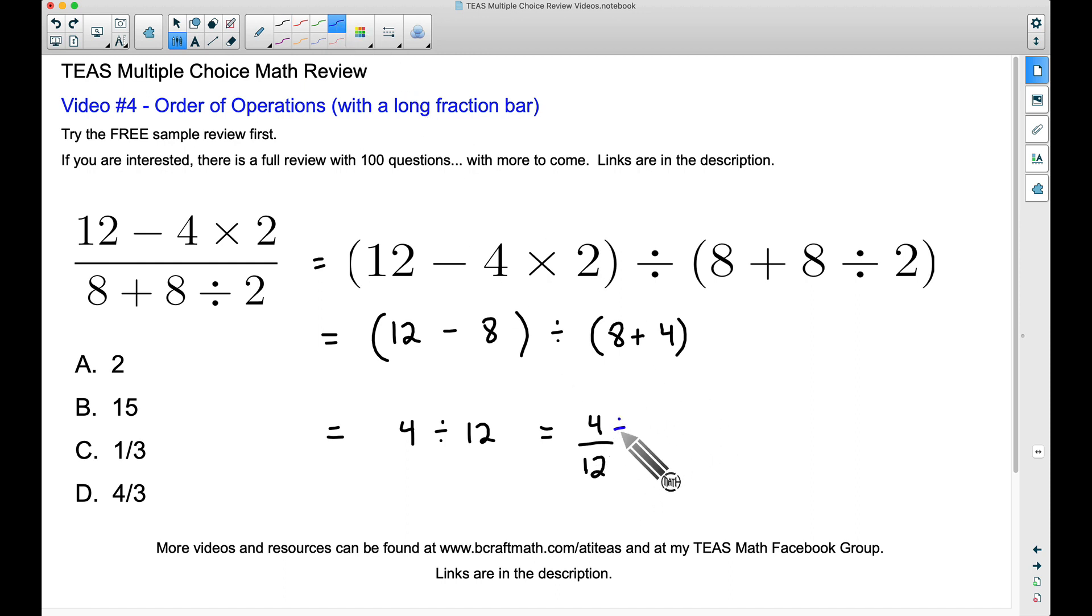And now what we need to do here is simplify our fraction. We can divide both the numerator and denominator by four, and four divided by four will give us one up top and 12 divided by four will give us three. Our final answer is going to be one third.